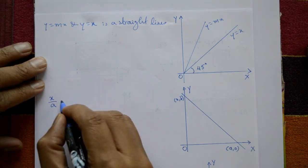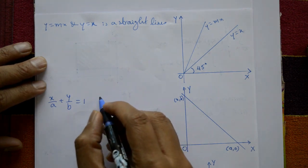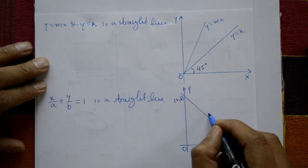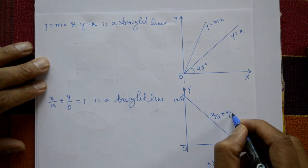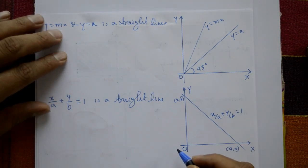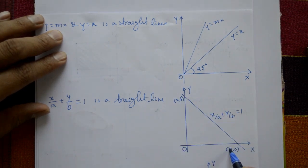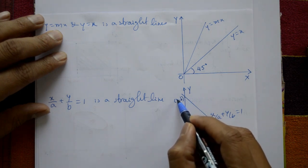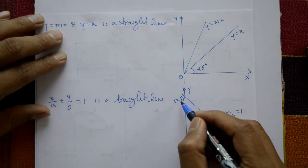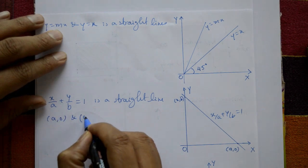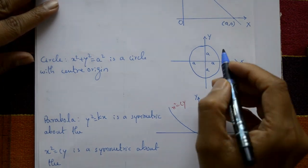One more straight line: x upon a plus y upon b equals 1. This is the intercept form. The origin is O. This line meets the x-axis at point (a, 0) and the y-axis at point (0, b). So the x-intercept is a and the y-intercept is b; the two points are (a, 0) and (0, b).